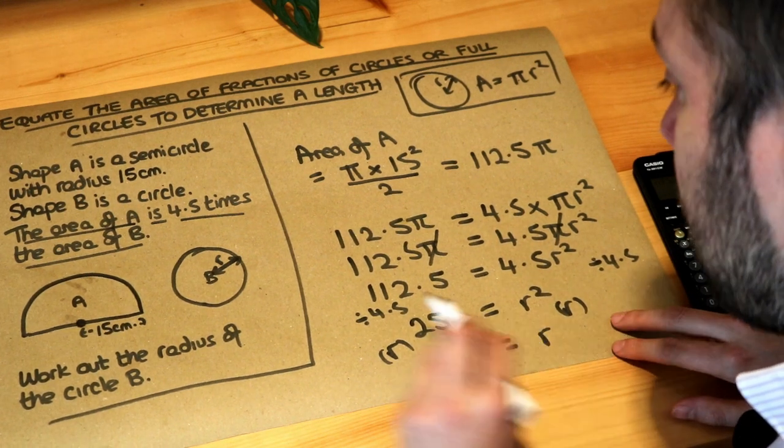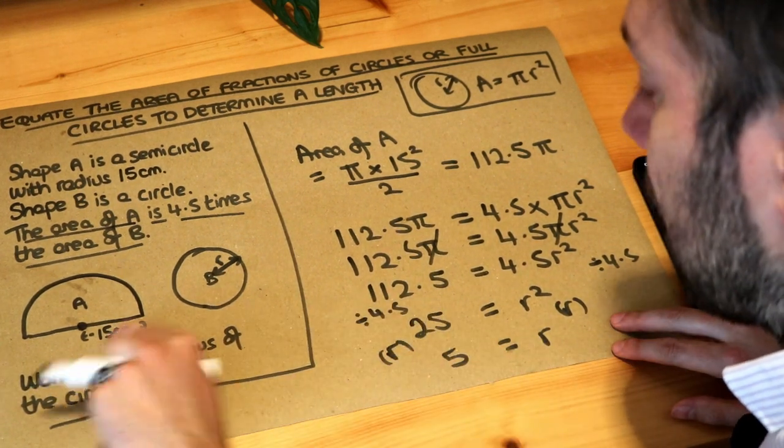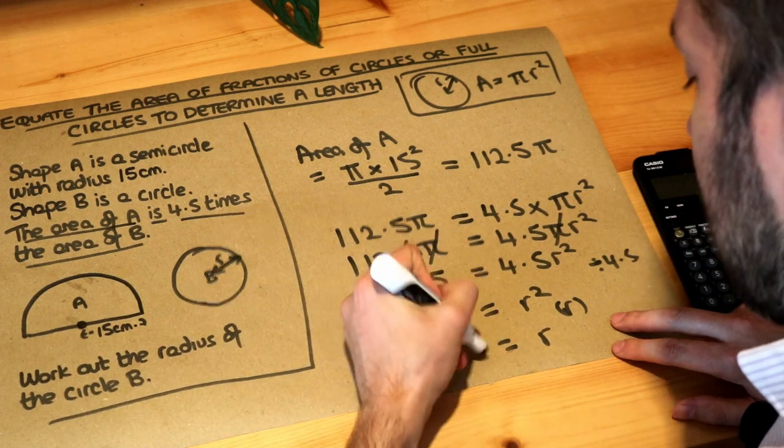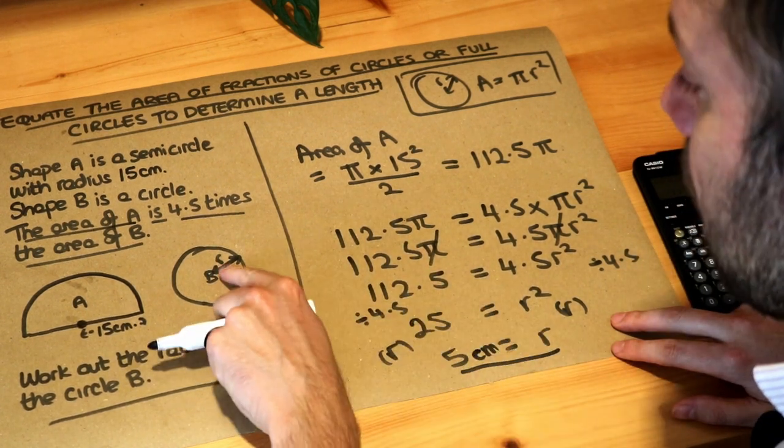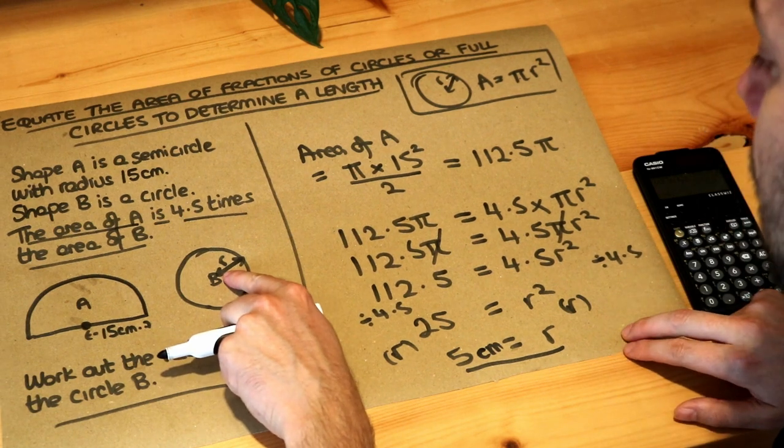So we can see that the radius is 5. And because that was in centimeters, this will be in centimeters as well. So the radius is 5 centimeters. That's the radius of that circle B there.